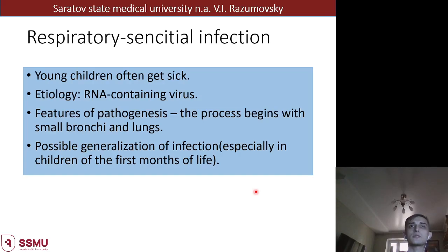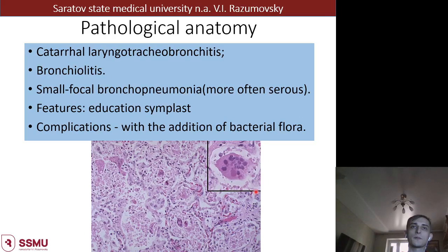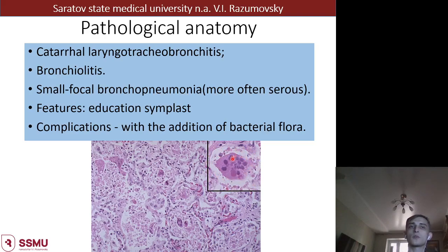Respiratory syncytial infection (RS infection) is more typical for children. The etiology is an RNA virus. Features of pathogenesis include affection of small bronchi and lungs, with possible generalization especially in children in the first months of life. Pathological anatomy shows catarrhal laryngotracheobronchitis, bronchiolitis, small focal bronchopneumonia, and formation of giant cells with multiple nuclei. Complications are possible with addition of bacterial flora.